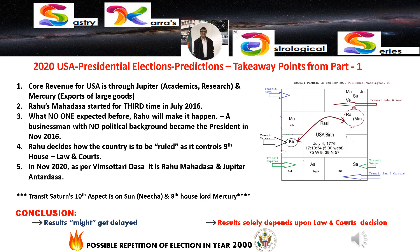Let me end this video with the takeaway points. For the United States, the core revenue comes through two major planets: Jupiter, which deals with academics and research, and Mercury, which deals with exports of large goods. This is clearly visible when you look at how the country's revenues are being earned.